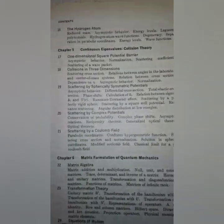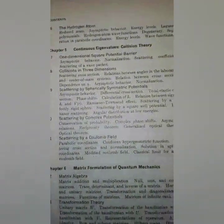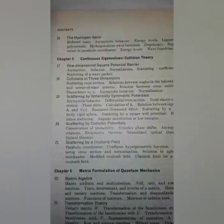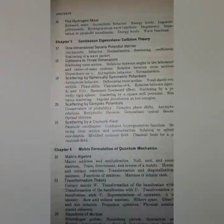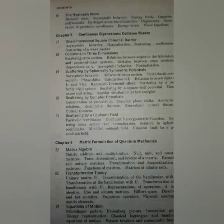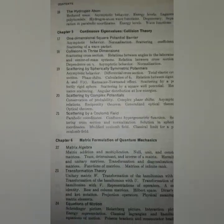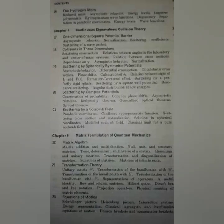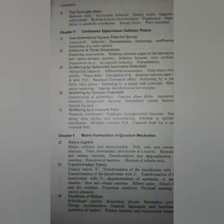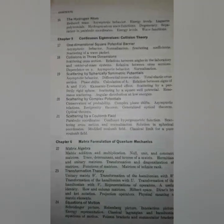And the hydrogen atom. Chapter 5: Continuous Eigenvalues and Collision Theory — one-dimensional square potential barrier, collision in three dimensions, scattering by spherically symmetric potentials, scattering by complex potentials, and scattering by a Coulomb field. Paragraph 21 covers scattering by a Coulomb field: parabolic coordinates, confluent hypergeometric function, scattering cross section, normalization solution in spherical coordinates, modified Coulomb field, and classical limits for Rutherford scattering.